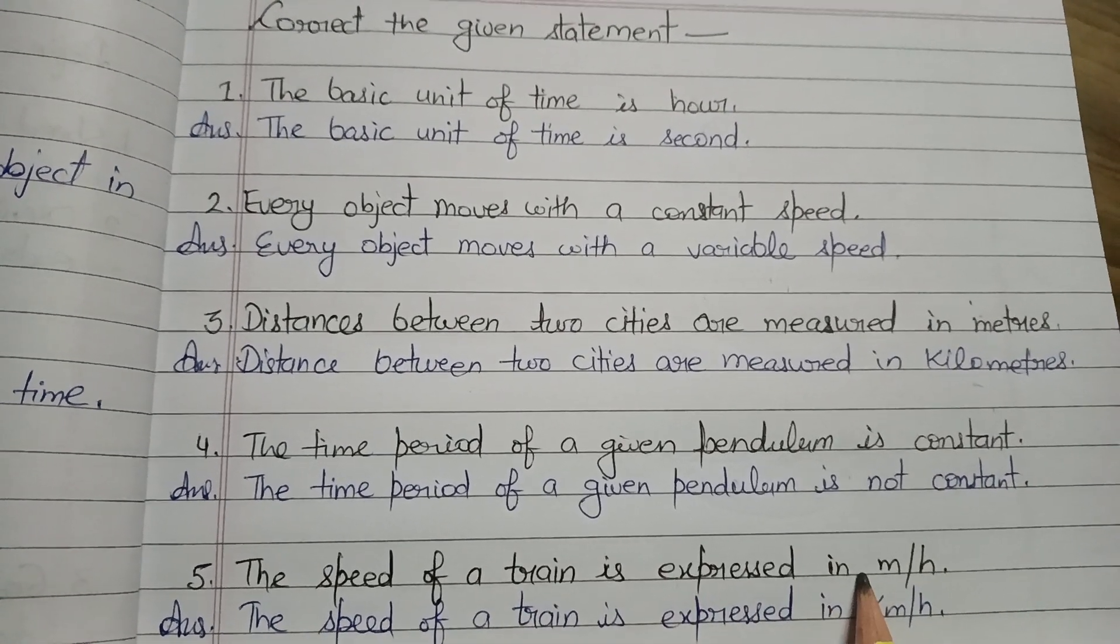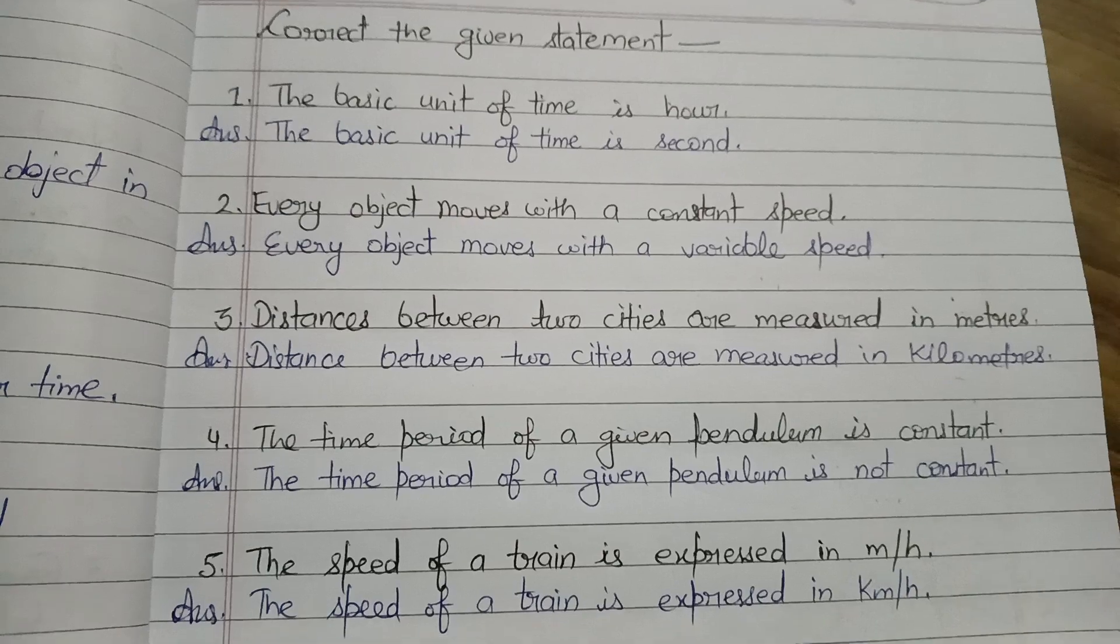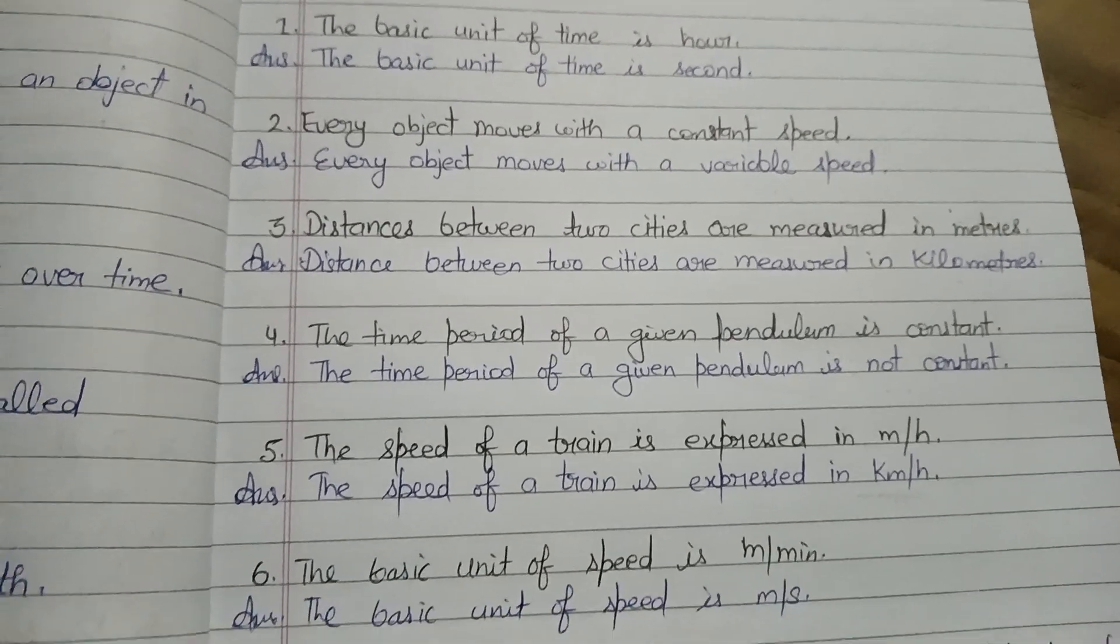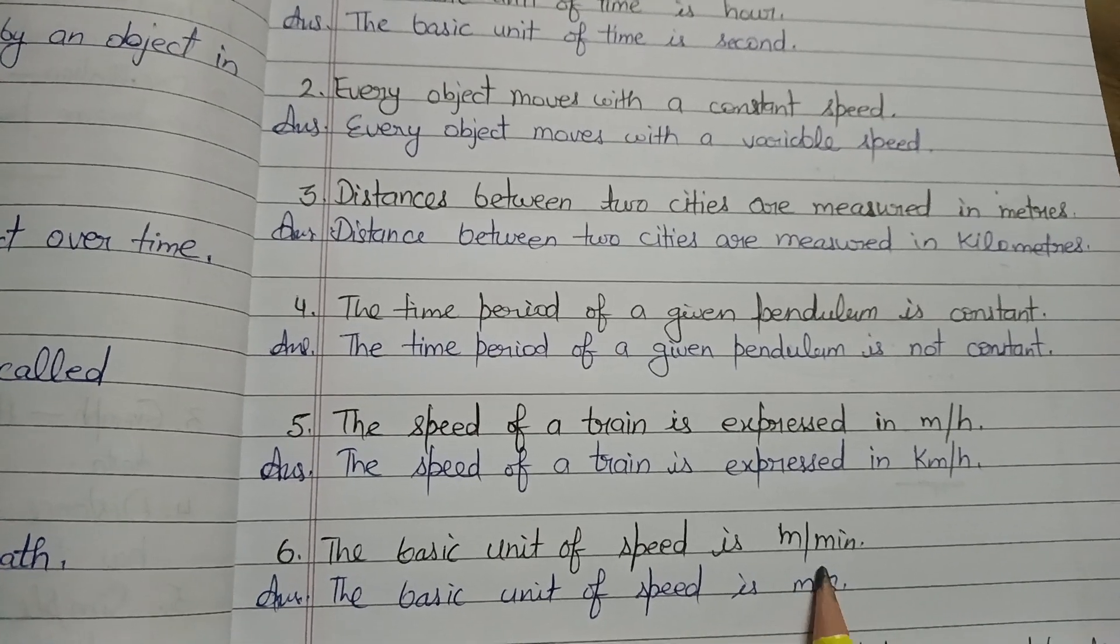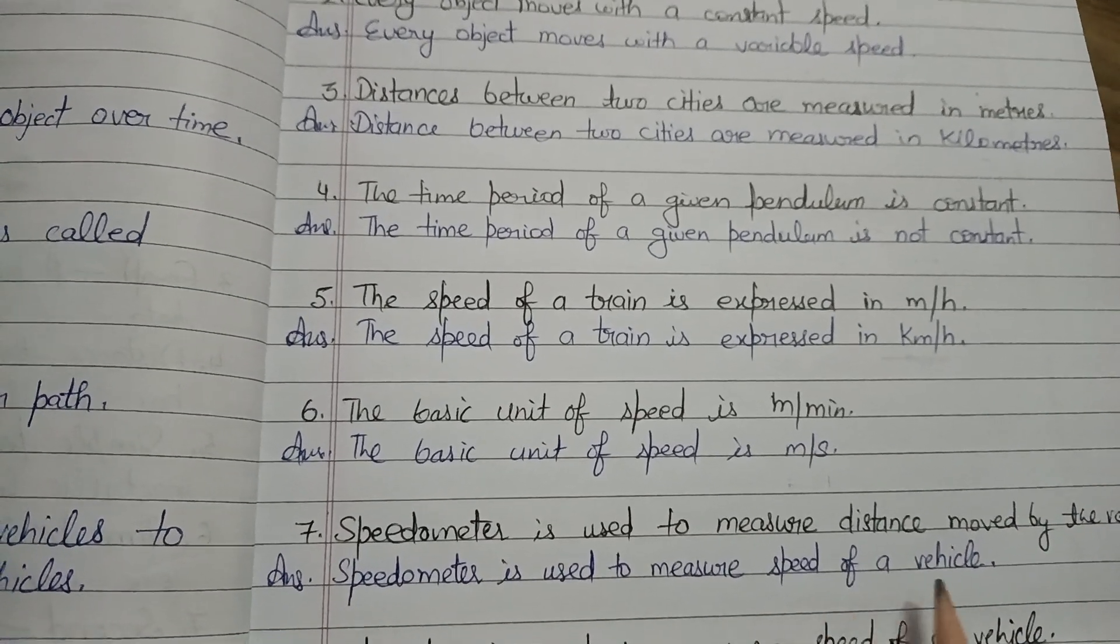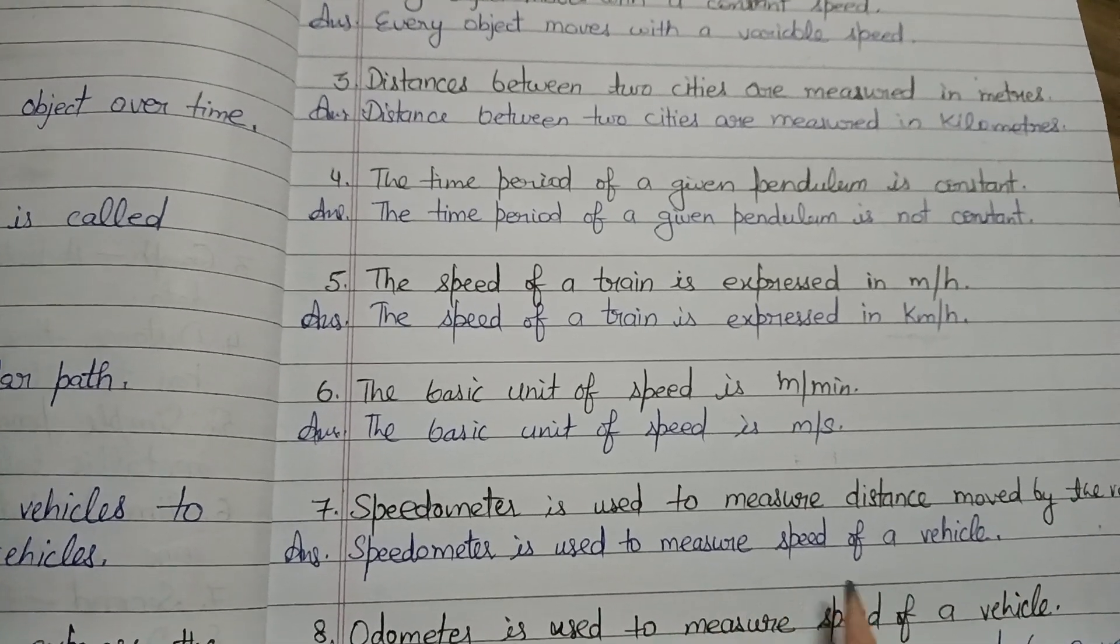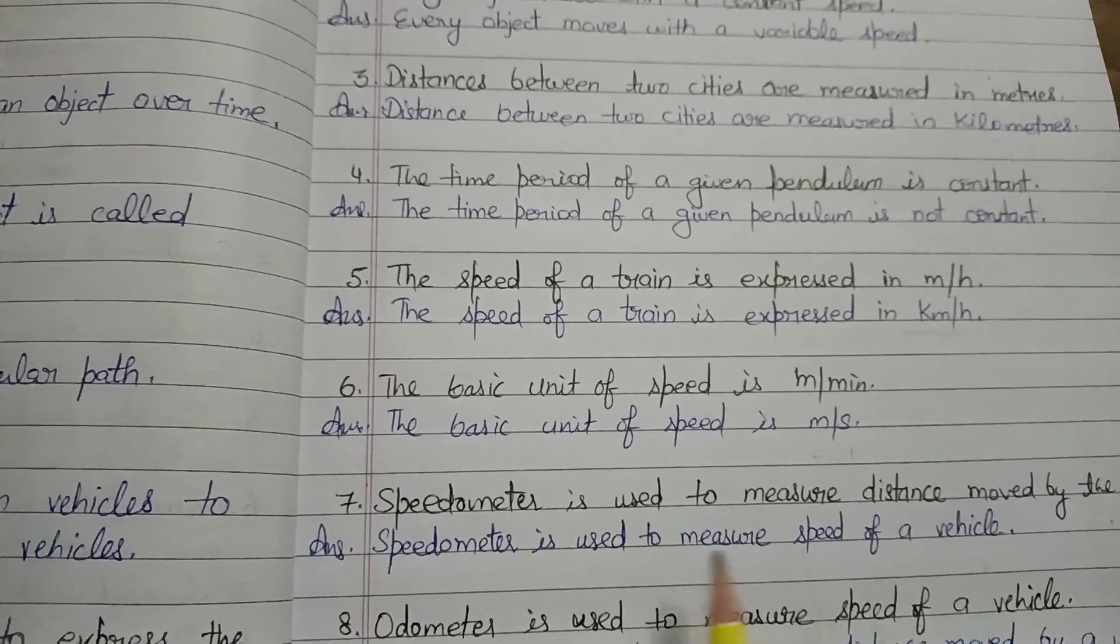Distance between two cities is measured in kilometers - yahan bhi meters given tha, to humne kilometer kar diya correct karke. Time period of a given pendulum is not constant - constant nahi hota hai. Speed of a train is expressed in kilometer per hour. Basic unit of speed is meter per second.